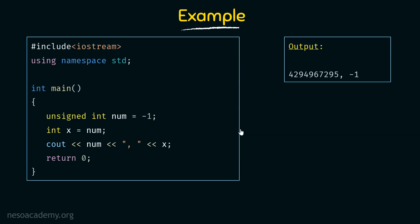When we printed num, a very strange number appeared. We will come back to that. What about the minus one for x? We stored minus one in num, and assigned that to x. Since x is a signed integer it can hold negative values, so it printed minus one. But for num — an unsigned integer — storing minus one and printing it gave that strange value. Why did this happen? Let's analyze and find out.